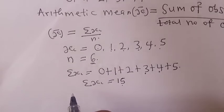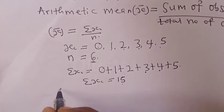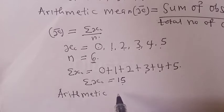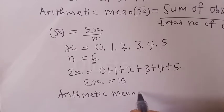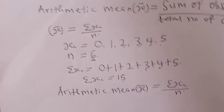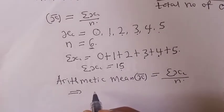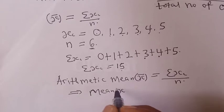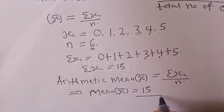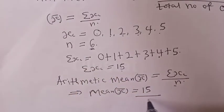Therefore our arithmetic mean x bar is equal to summation of xi over n. This implies that we have mean x bar equals 15 over 6.